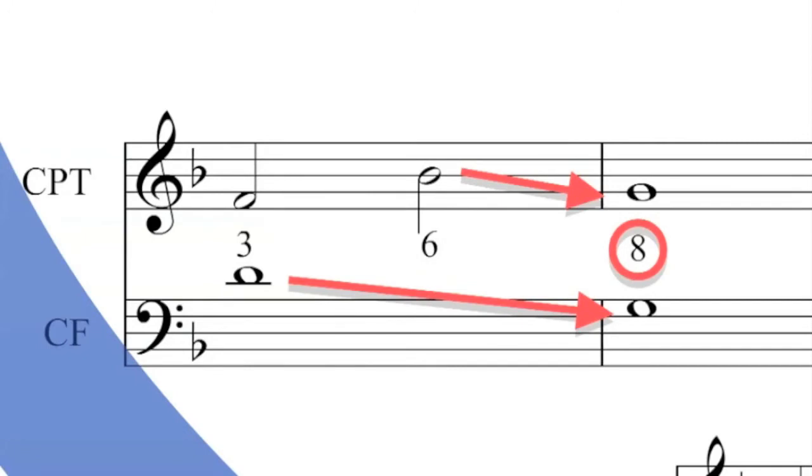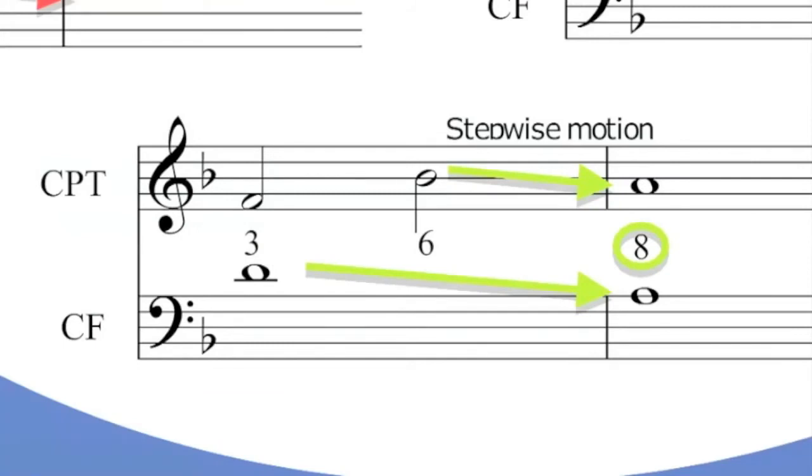A direct octave or fifth across a bar line is not permitted. So moving from a weak beat to a strong beat in similar motion to a perfect interval is not permitted, unless of course the upper voice moves by step. In which case it's perfectly fine as it was in first species.